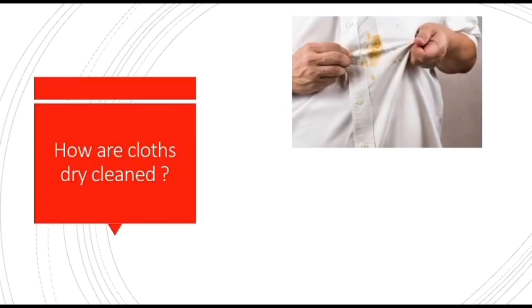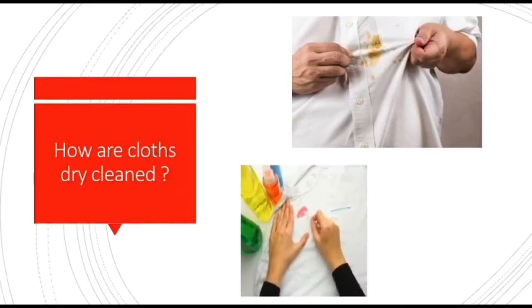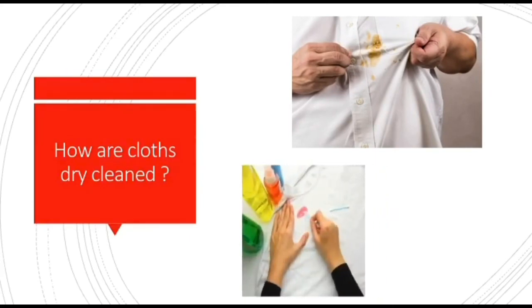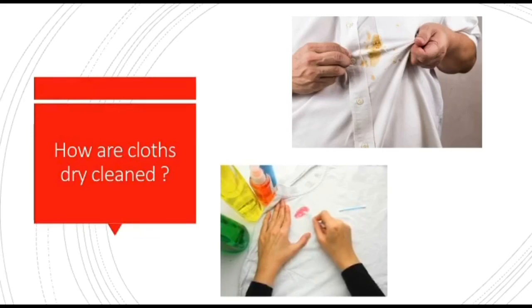Did you understand students? Stained clothes is nothing but the clothes which have become dirty with oil or any kind of things. Some other solvents like petrol are used for dry cleaning. The oil from the stain gets dissolved in it and the clothes get clean.